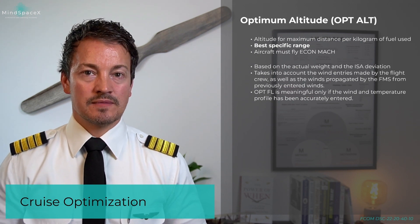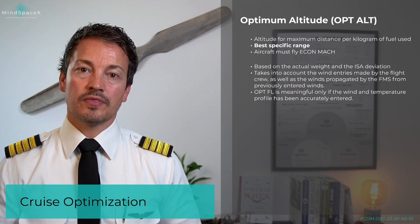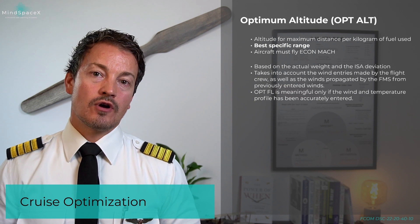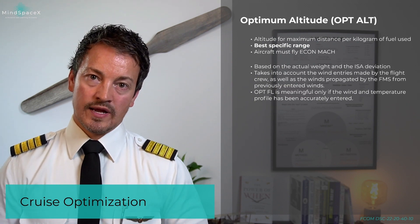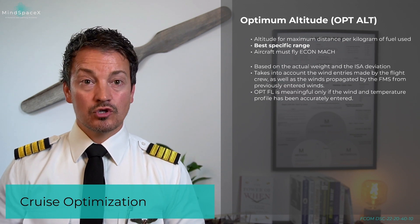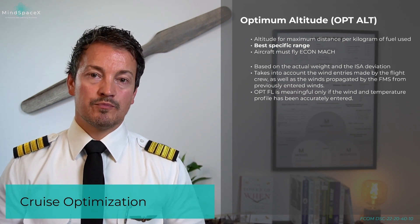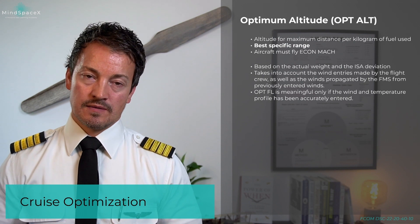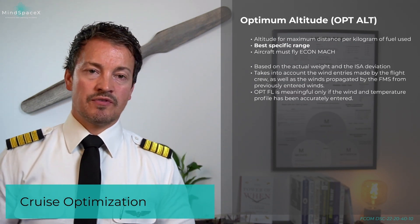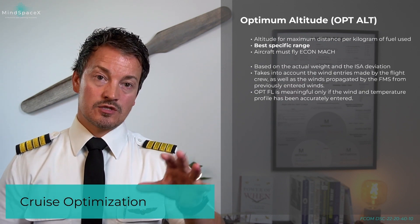When calculating the optimum altitude, the flight management and guidance system takes into account the wind entries made by the crew, as well as winds propagated by the FMS from previously entered winds. The optimum flight level is only meaningful, therefore, if the crew have inserted the proper temperature and wind into the system. Always make sure that you have the most accurate and comprehensive information programmed into the MCDU, as it will give you the best performance.